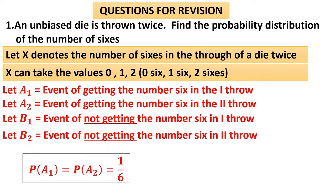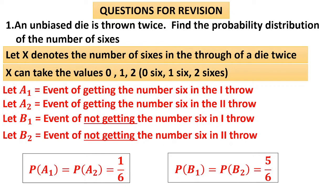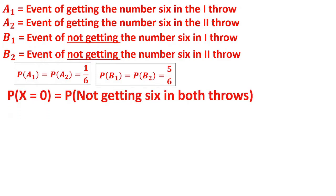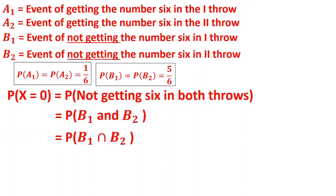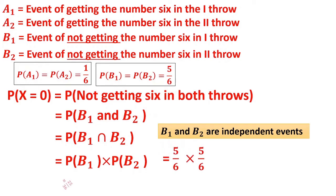The probability of A1 and A2 (getting a 6) is 1/6. The probability of B1 and B2 (getting a non-six, since 5 other numbers can come) is 5/6 each. For P(X=0), not getting 6 in both throws means B1 and B2 — since they are independent events, P(B1 ∩ B2) = P(B1) × P(B2) = 5/6 × 5/6 = 25/36.